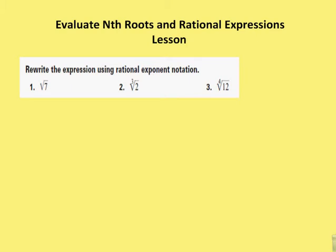All right, so just reviewing the basics, we want to rewrite this expression using rational exponent notation. So in this case, I remember that if there's no index that's listed and there's no power that's listed, then the index is 2 and the power is 1. So I can rewrite this as 7 to the 1 half. So the square root of 7, I can rewrite as 7 to the 1 half.